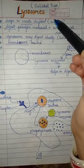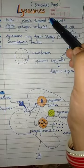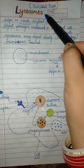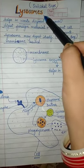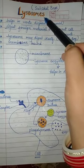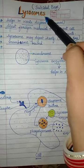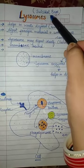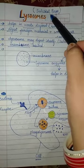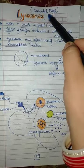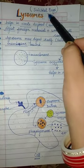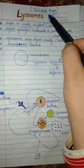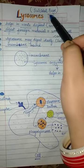Hello students, good morning to all. Our today's topic is lysosomes. Lysosome is one of the most important cell organelles. It is also known as suicidal bags. Today we will discuss about why these lysosomes are termed as suicidal bags.